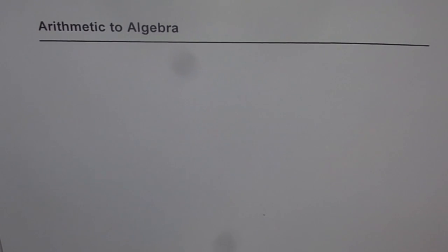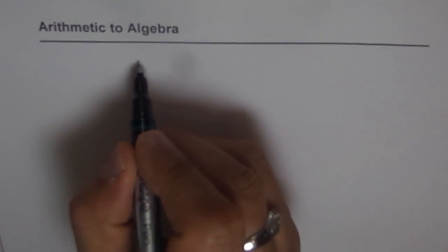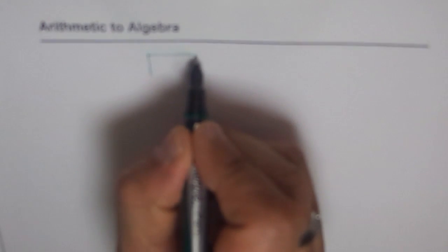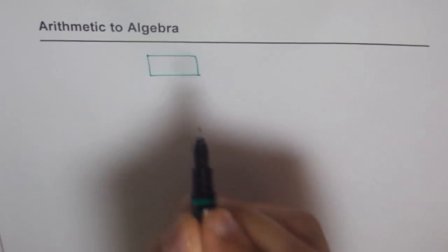Arithmetic to algebra. As you are graduating from junior to middle school, we are changing over from arithmetic to algebra. Let's see how. I'll take here a few situations and then we'll compare how we'd graduate from arithmetic to algebra.